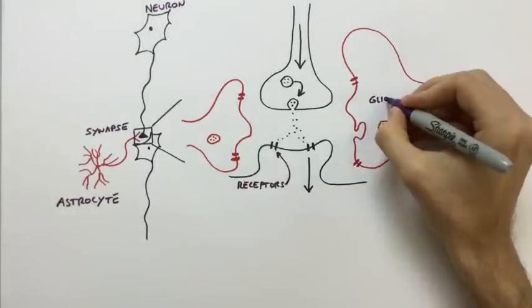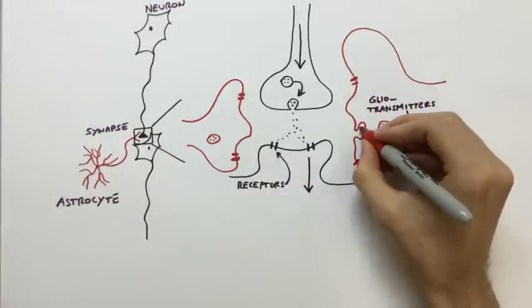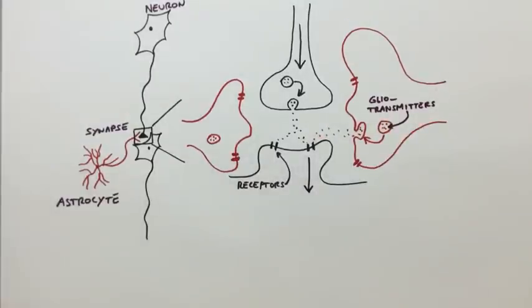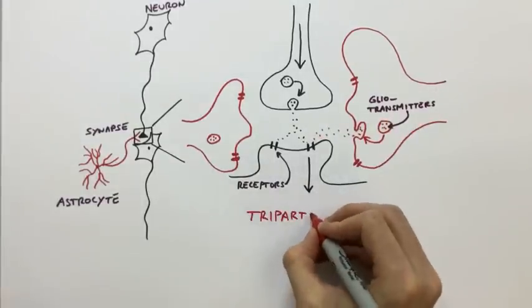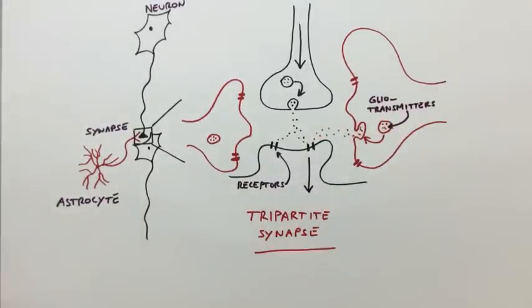This gave rise to a much more complex and complete picture termed the tripartite synapse, a concept discovered and developed by Dr. Philip Hayden. Over the past 20 years, we have been investigating the role that astrocytes play in the control of synapses, circuits, and behavior.